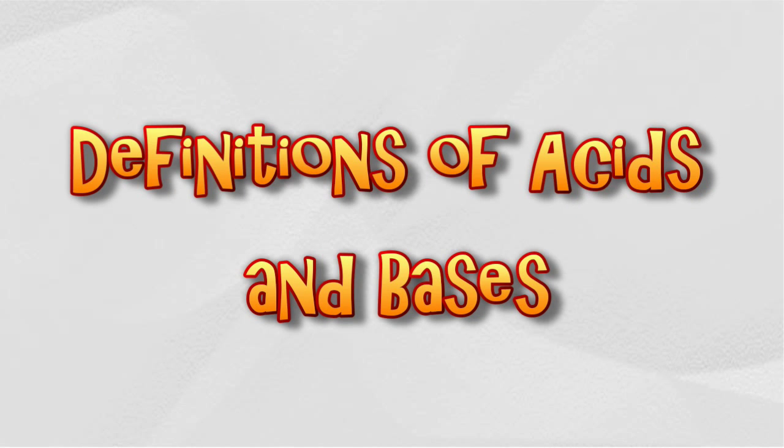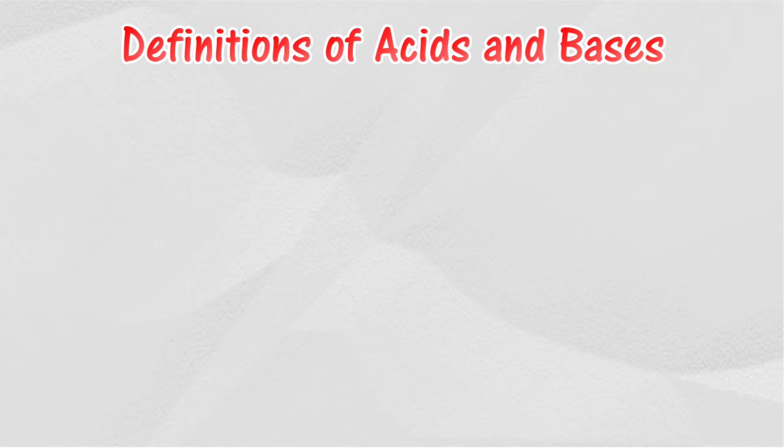Definitions of acids and bases. An acid is a chemical compound which dissociates to produce hydrogen ion or hydroxonium ion when dissolved in water.